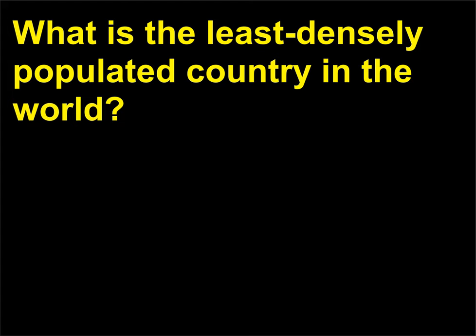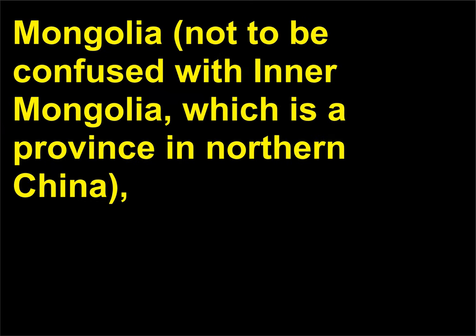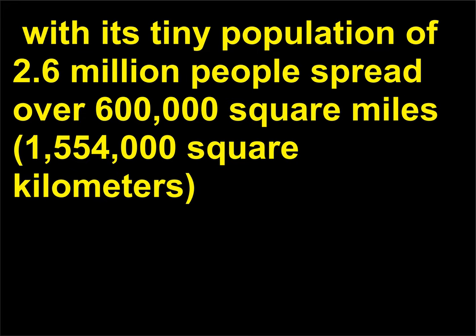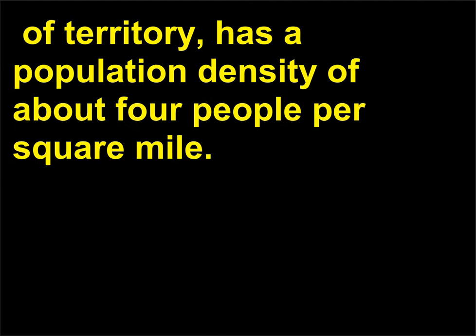What is the least densely populated country in the world? Mongolia, not to be confused with Inner Mongolia which is a province in northern China, with its tiny population of 2.6 million people spread over 600,000 square miles (1,554,000 square kilometers) of territory, has a population density of about 4 people per square mile.